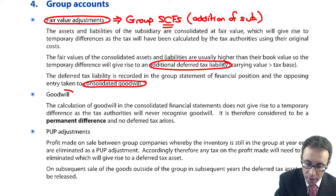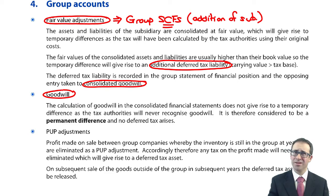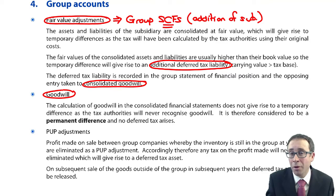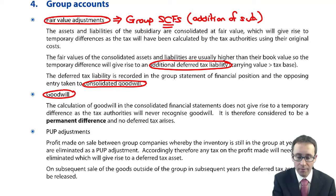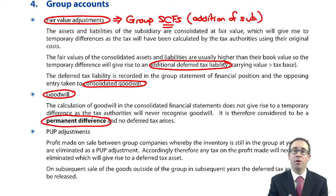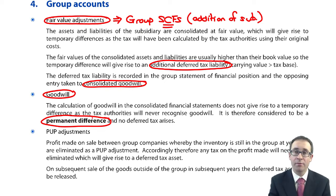In terms of goodwill, goodwill is an additional asset that we bring into the consolidation. The tax authorities think of goodwill as a made-up number, and they don't like things being made up — they like factual things. Therefore, goodwill will be a permanent difference. With permanent differences, there is never any deferred tax. So for goodwill, ignore it — there's no adjustment to make.